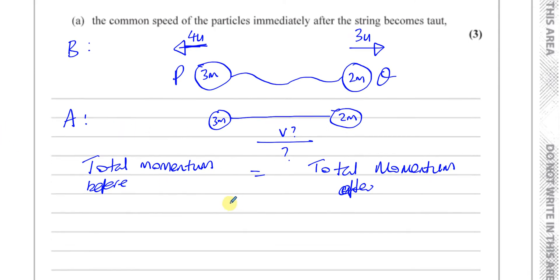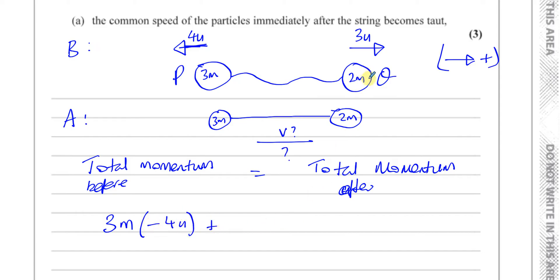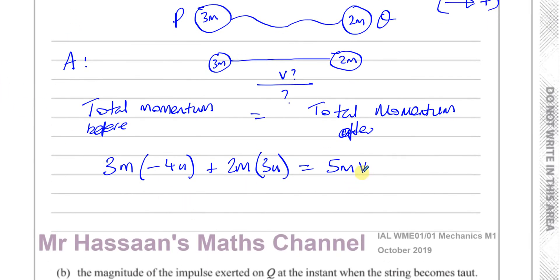Let's look at the momentum before. We have to take care of directions — I'm going to take the right as positive. So looking at the momentum for P, it's mass 3m times velocity, which is in the opposite direction to positive, so I'll put this as minus 4u. Plus, for Q, the mass is 2m and the velocity is 3u in the positive direction. After the collision, we consider them as one particle with a common speed: 5m times the final velocity v. This gives us minus 12mu plus 6mu equals 5mv.